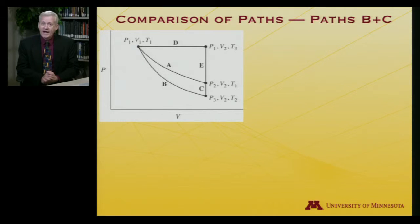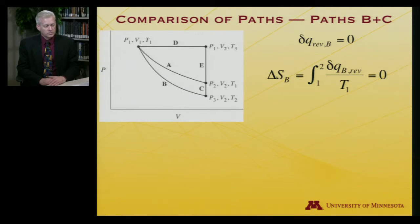Now, let's consider paths B and C. So path B is particularly simple. Path B is the adiabatic expansion, and adiabatic means that there is no heat transfer - del Q is equal to zero. So in that case, the entropy change, if I integrate zero divided by T, it doesn't really matter what T is - I'm integrating zero, and I get zero. So the change in entropy for an adiabatic expansion is zero.